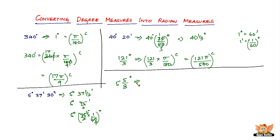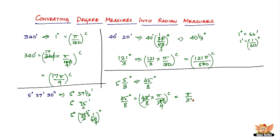Converting to an improper fraction: 8 times 5 is 40, plus 5 is 45, giving 45/8 degrees. Now converting to radians: 45/8 times π/180 — 45 goes 4 times into 180 — giving π/32 radians. So 5 degrees, 37 minutes, and 30 seconds converted to radian measure is π/32 radians.